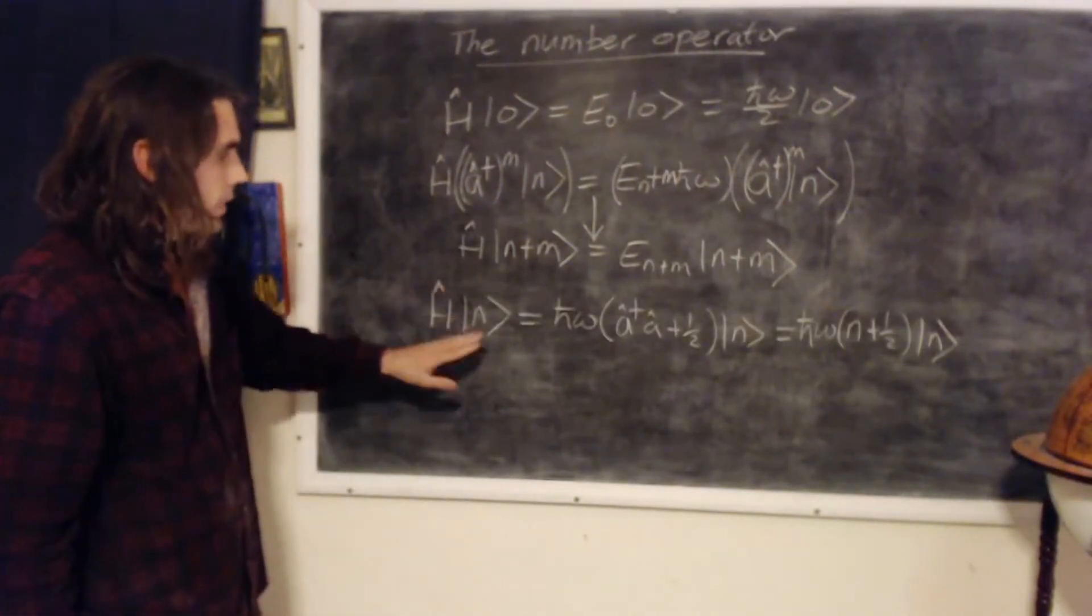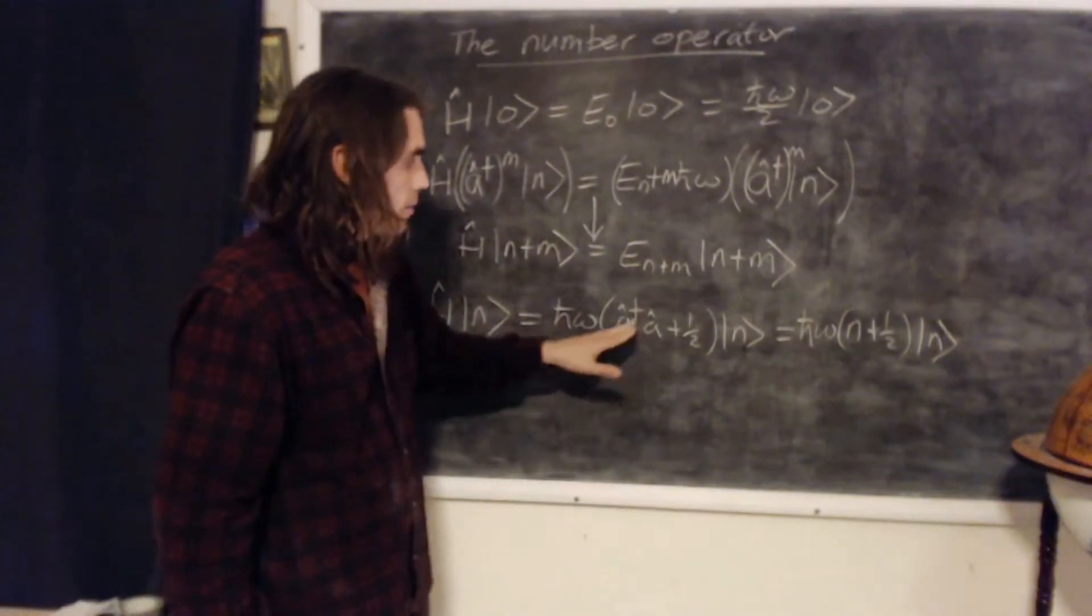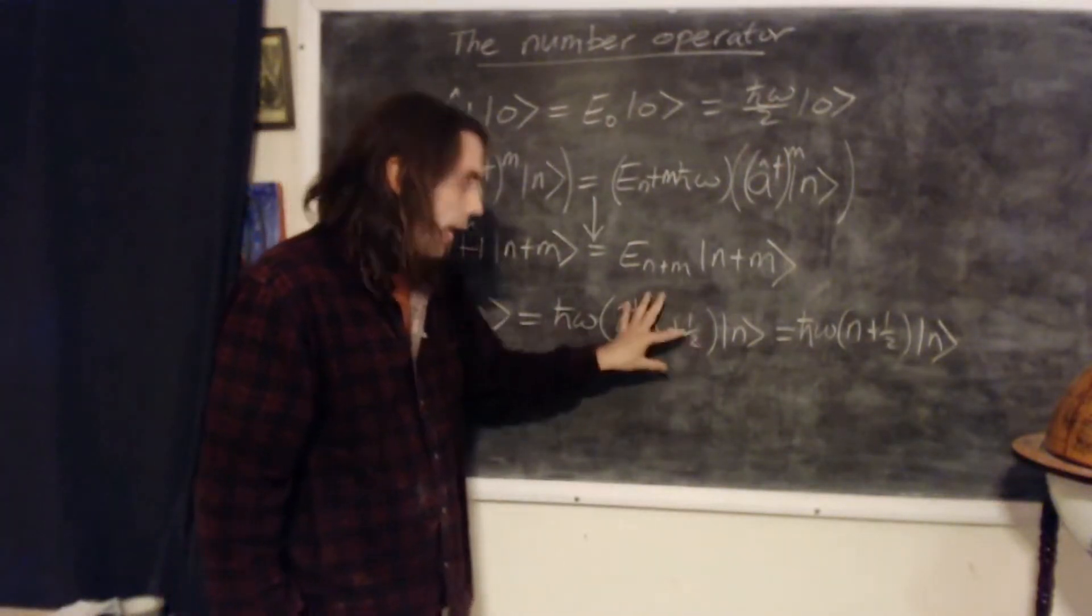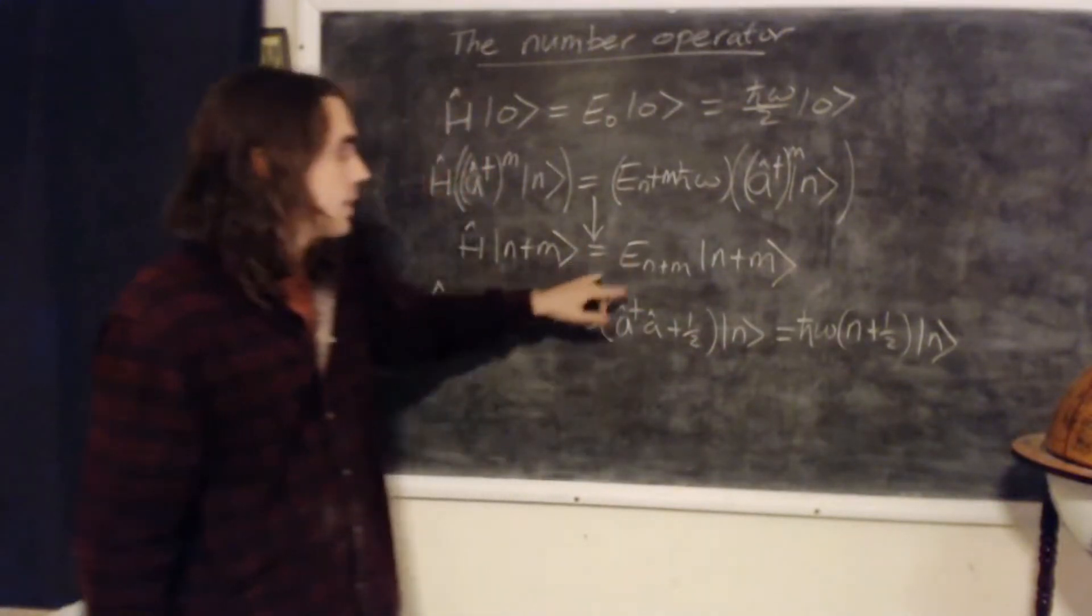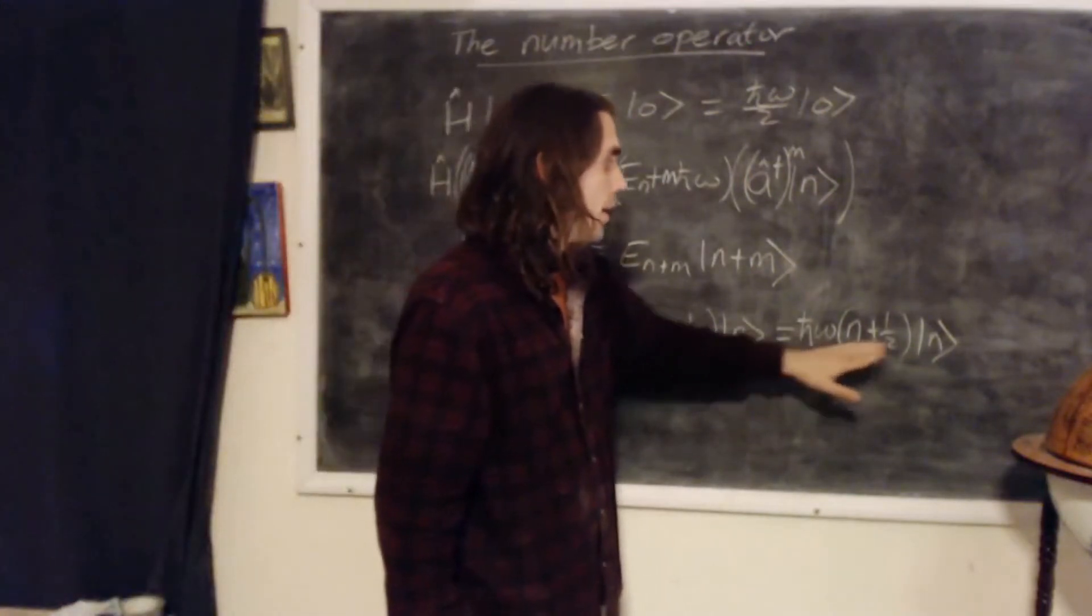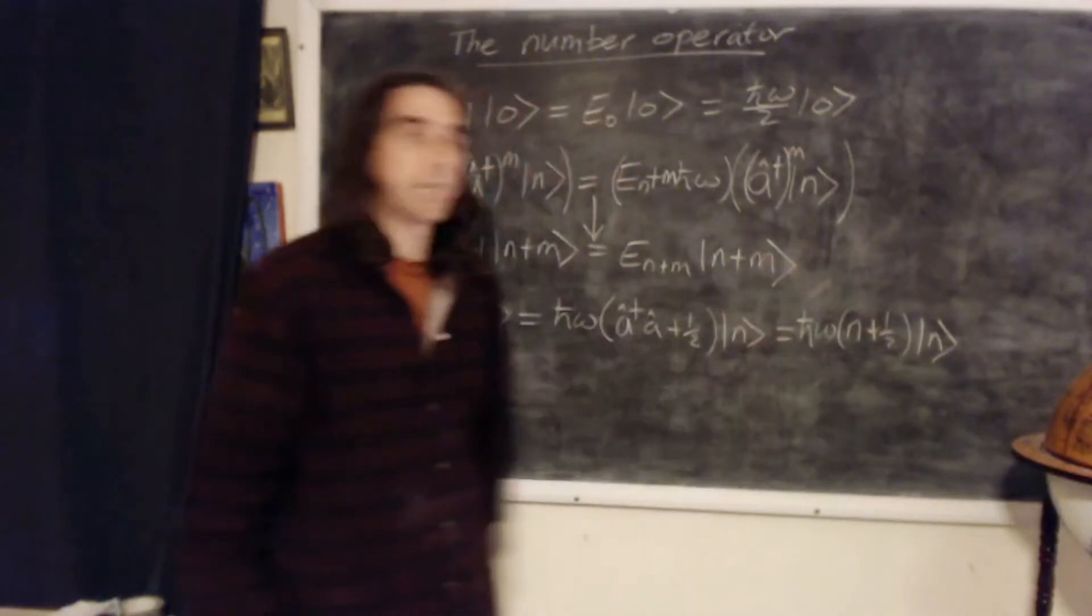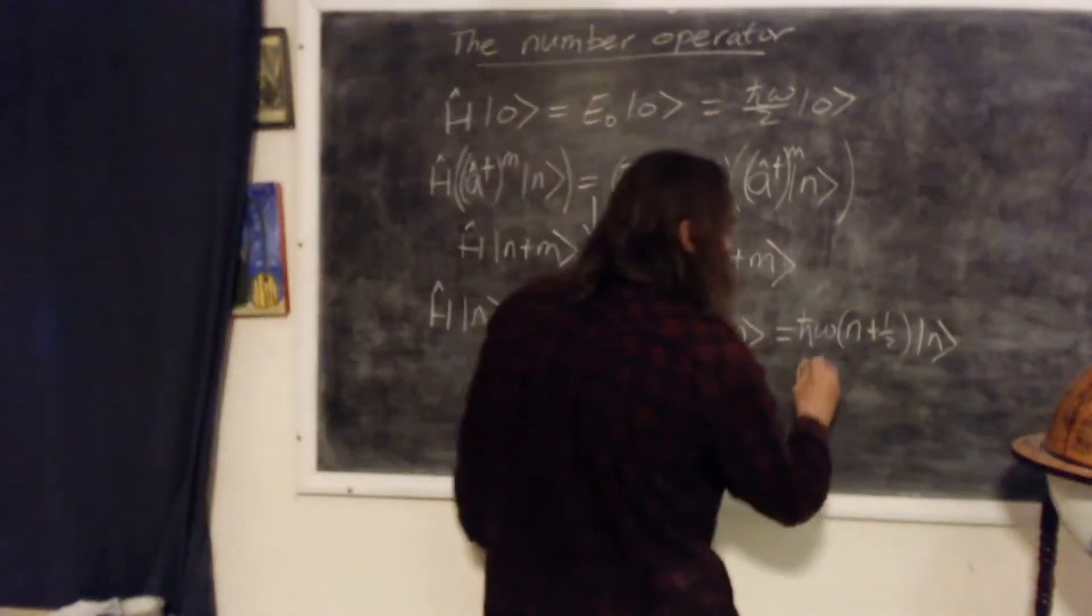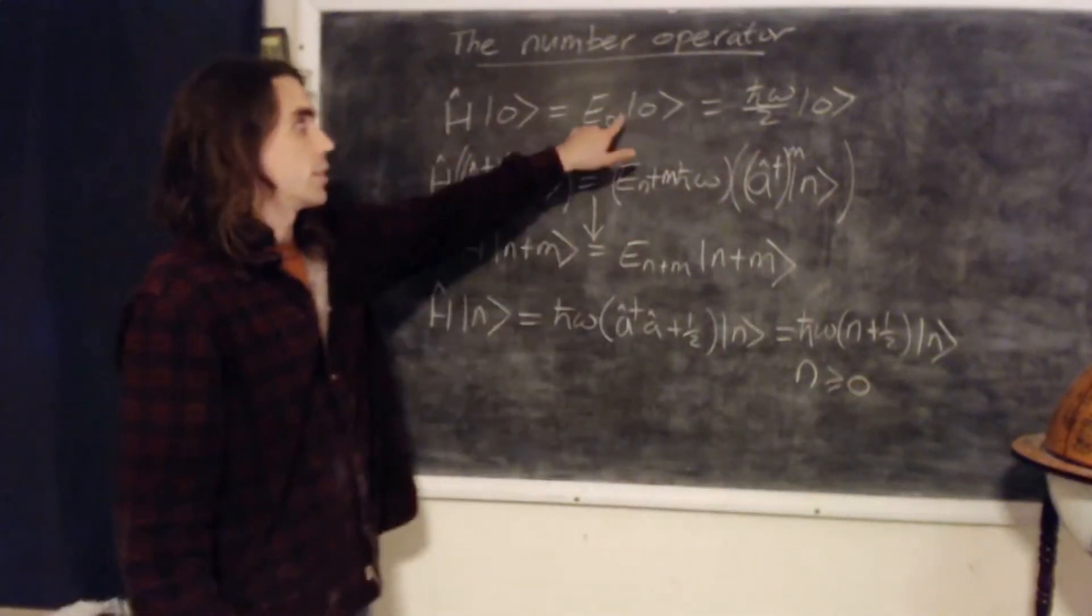The Hamiltonian acting on eigenstate n is just equal to h bar omega times a dagger a plus a half acting on n, we've seen this before in a previous video, and what this is telling us is that the energy eigenvalue associated with that is just h bar omega n plus a half, where n is an integer labeling the state, and then here goes from zero upwards, so zero is the energy of the ground state.